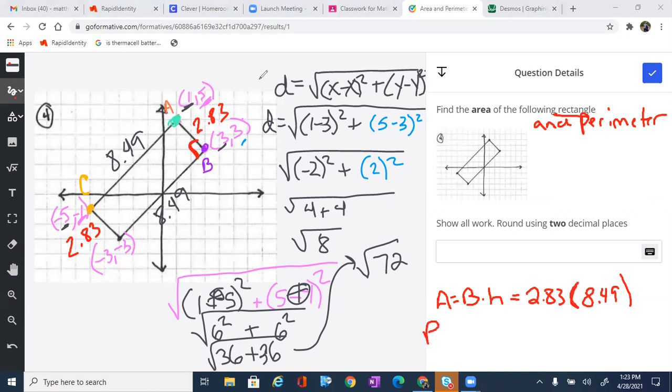And then when we need to find the perimeter, we're just going to add those up. So remember, there's 2 times 8.49, and then I'm going to add the 2.83. So 2 times 2.83.